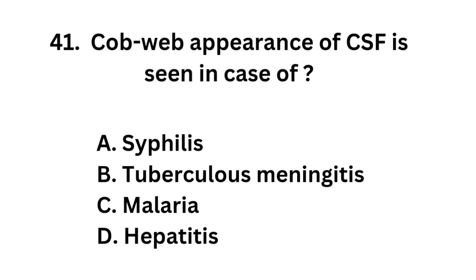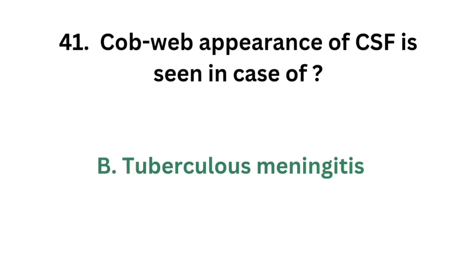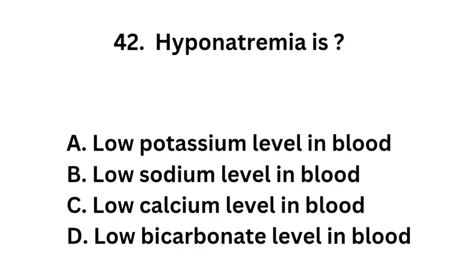Question number 41: Cobweb appearance of CSF is seen in case of. Option A: Syphilis. Option B: Tubercular meningitis. Option C: Malaria. Option D: Hepatitis. The correct answer is option B: Tubercular meningitis. Cobweb appearance of CSF is seen in tubercular meningitis.